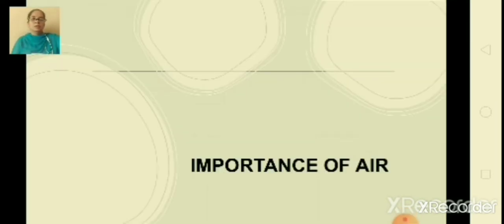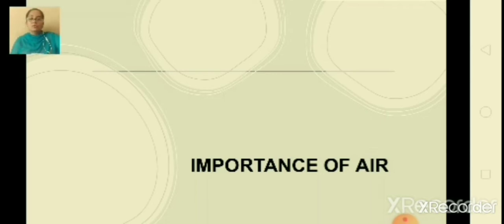Children, we all know that air consists of several gases. One of them is carbon dioxide. Carbon dioxide is also known as a greenhouse gas. The sun's rays warm the earth — this we all know.